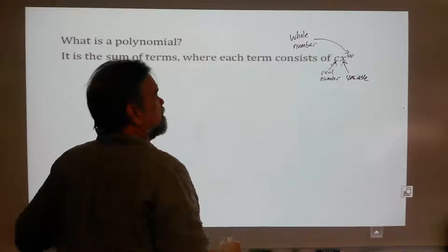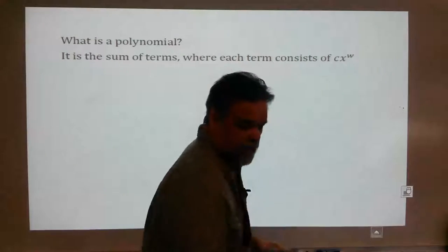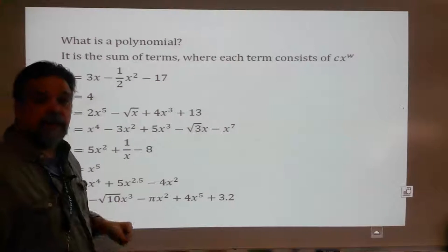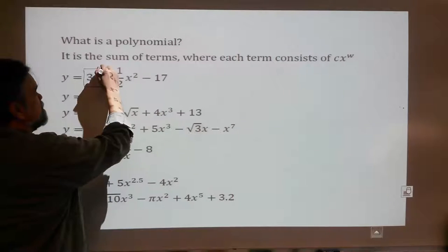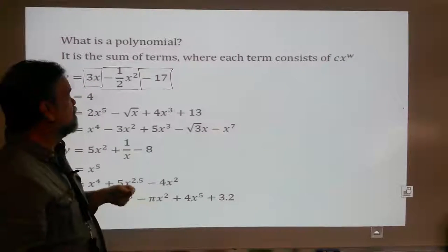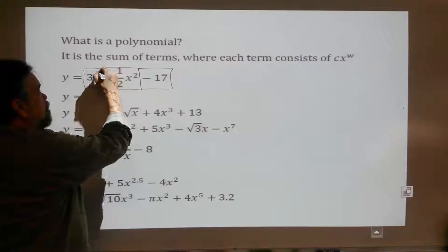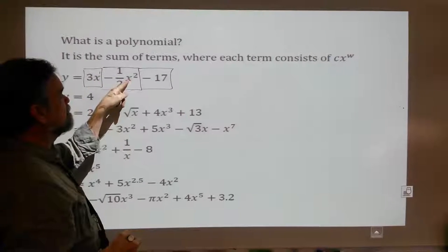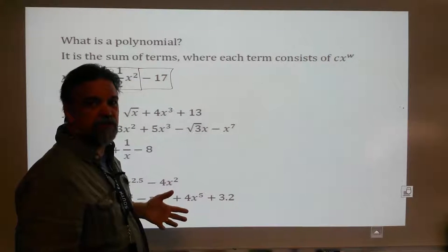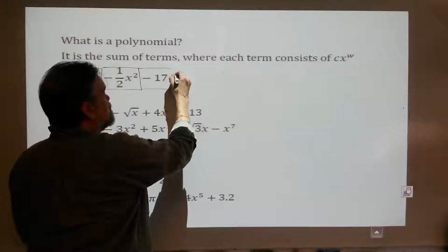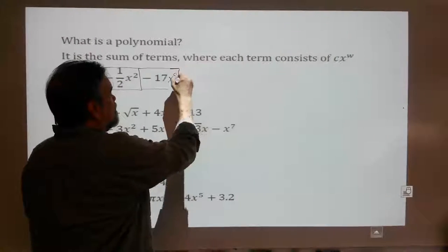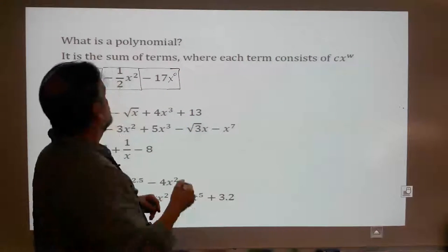Let's look at some examples. y equals 3x minus one-half x squared minus 17. It's a polynomial. Each term — here's one term, here's another term, here's another term. Each term has a coefficient, 3; a variable, x; and an exponent. Well, there's no exponent there, but if there's no exponent, that means x to the 1 power. Coefficient negative one-half, x, and an exponent 2 — that's a whole number. Coefficient negative 17, but there's no variable or exponent. That's okay — think x to the 0 power. x to the 0 is 1, and that makes any number legitimate as a term of a polynomial. So yes, that is a polynomial.